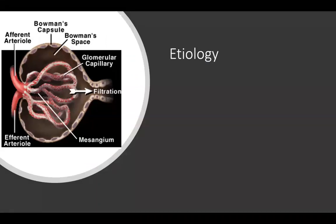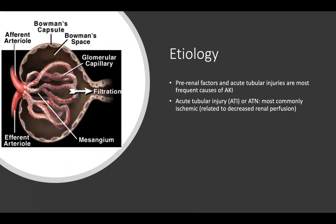The most common causes of AKI are pre-renal factors and, in hospitalized patients, acute tubular injury. ATI is most commonly ischemic, from prolonged poor blood flow causing tubular ischemia. Pre-renal and ATI can share the same causes — prolonged volume depletion or low blood pressure — but in ATI, the insult has been severe or prolonged enough to cause actual tubular injury. In pre-renal, there's no actual tissue injury, so reversal leads to quick improvement. ATI takes longer to recover.